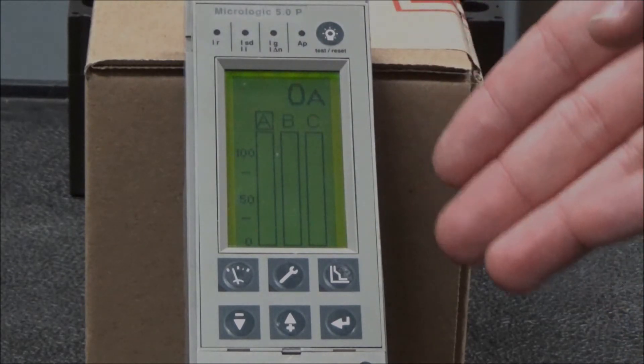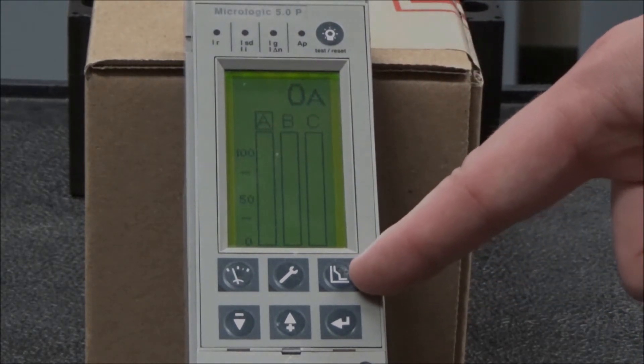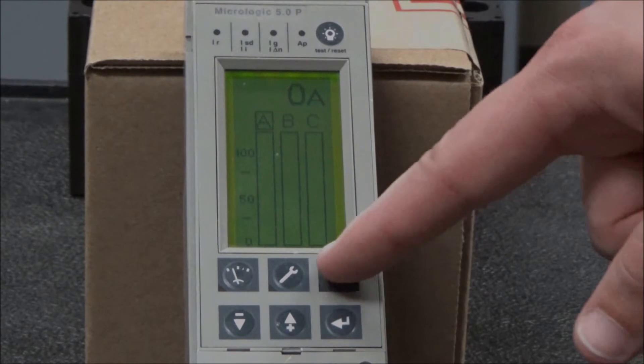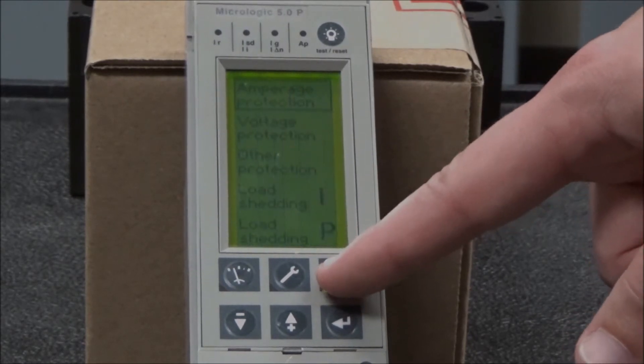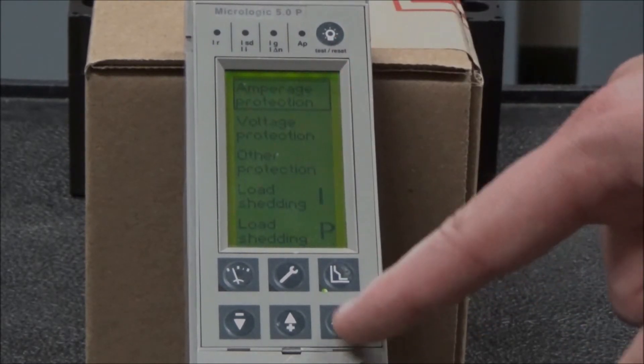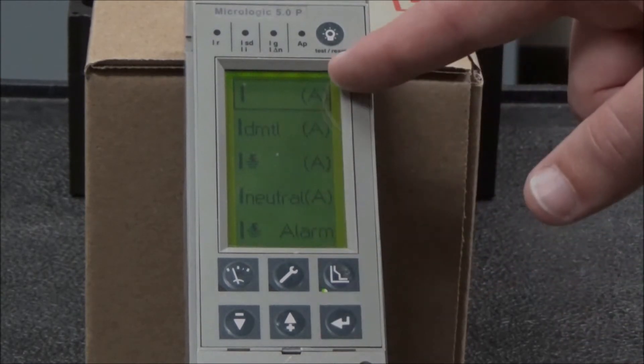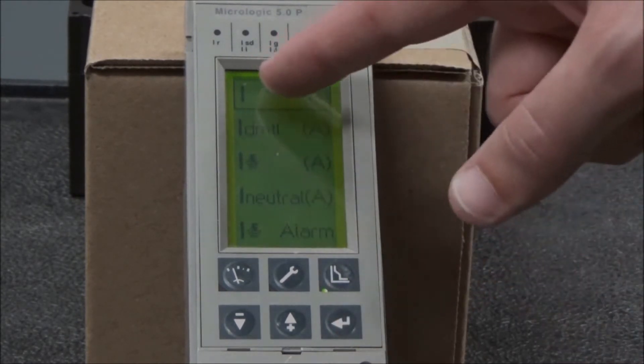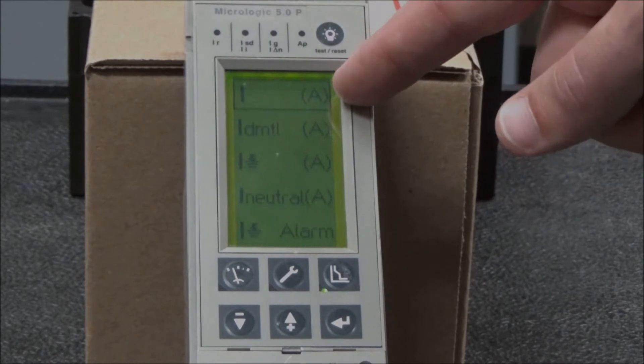From the home screen you will hit this top right button that looks like a trip curve, and then you will select amperage protection, and then you'll select the first option I with a parenthesis A to the right.